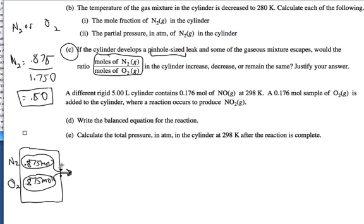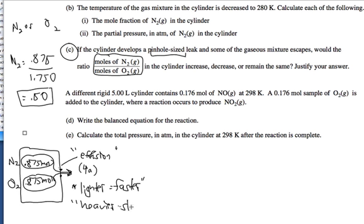So this process of gases leaving a hole, this is called effusion, and we're going to talk about this in class a little bit more. So we're looking at 4a, and in 4a, we know it says that the lighter is faster, and the heavier is slower. Let's recall that the molar mass of nitrogen is 28 grams per mole, and that of oxygen is 32.